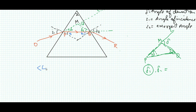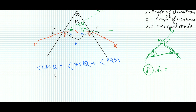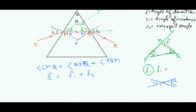First I find the relation between delta, delta one, and delta two. By the exterior angle theorem: angle LMQ equals the sum of opposite interior angles MPQ plus MQP, so delta equals delta one plus delta two. Now, at the first surface, the complete angle is i1, with components delta one and r1, so delta one equals i1 minus r1.